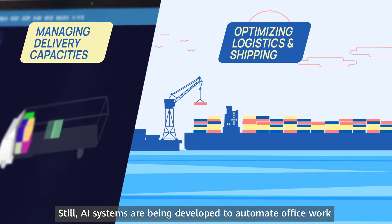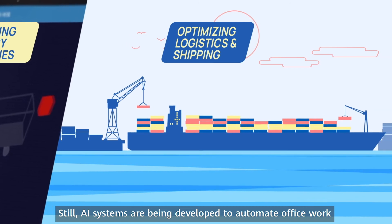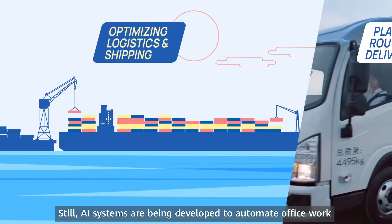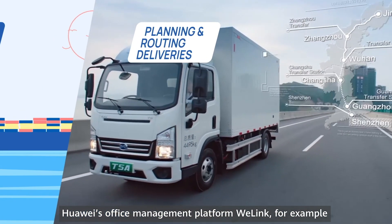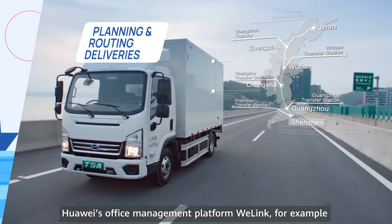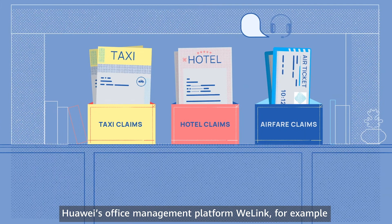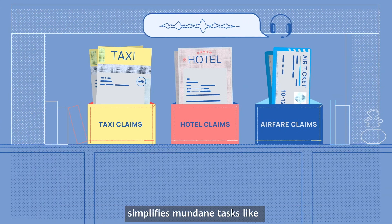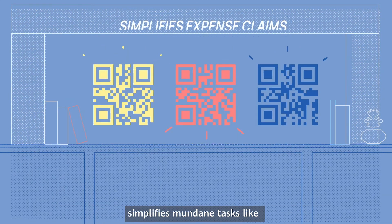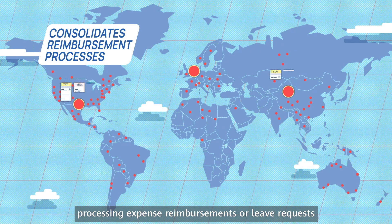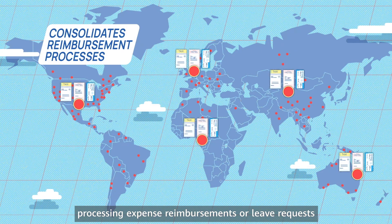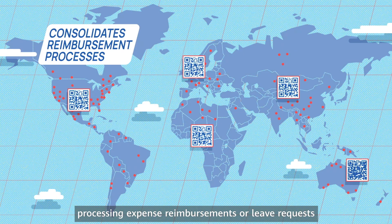Still, AI systems are being developed to automate office work. Huawei's office management platform, WeLink for example, simplifies mundane tasks like processing expense reimbursements or leave requests.